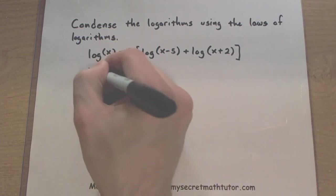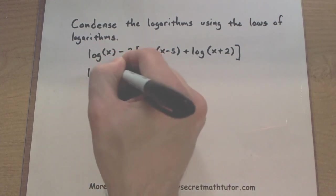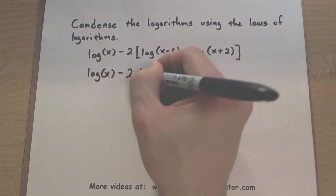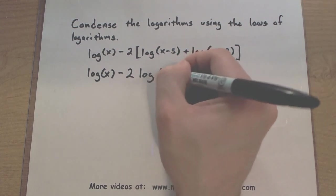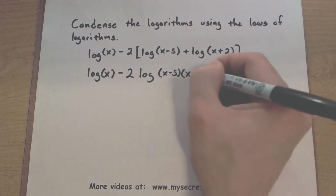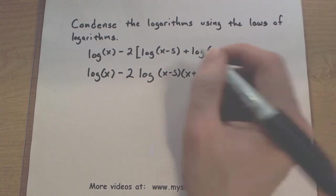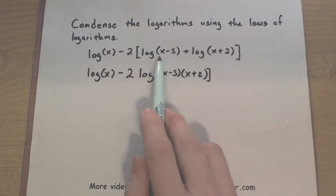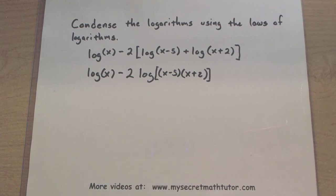Well, according to my laws, if we have two logarithms that are being added together, they can combine into a single logarithm, such that the insides of each of those logs are now being multiplied together. So the original insides were an x minus 5 and an x plus 2. There they are. They're now inside of a single log.